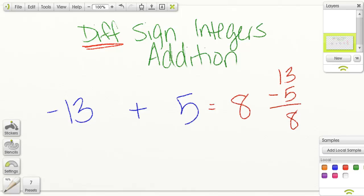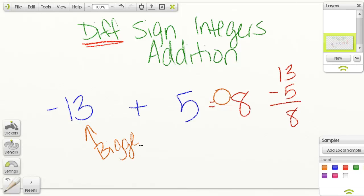Now I need to figure out what my sign is. What goes here? Well, I need to look at my bigger number. This is bigger, so it gets the sign.